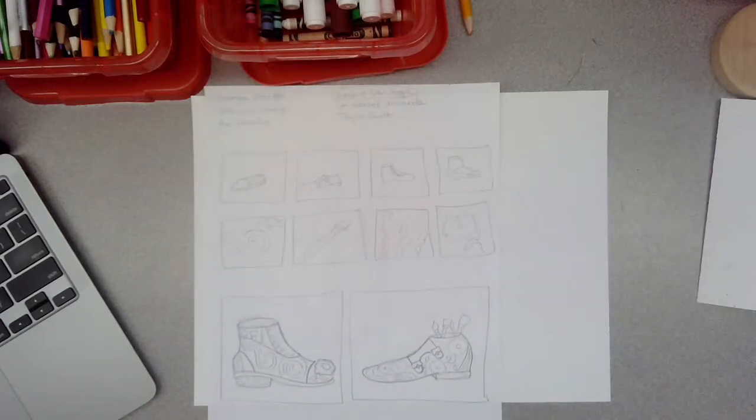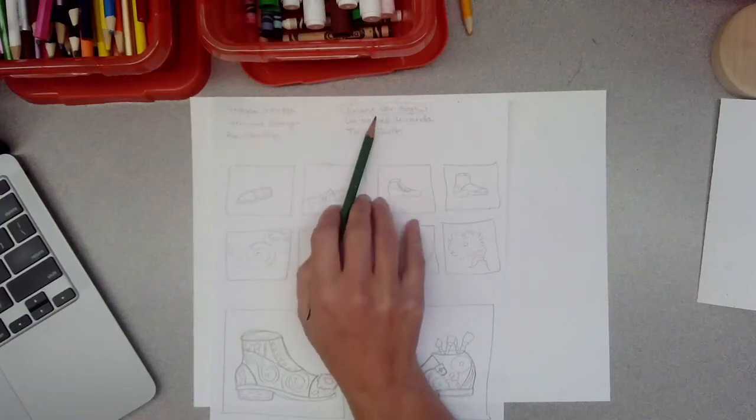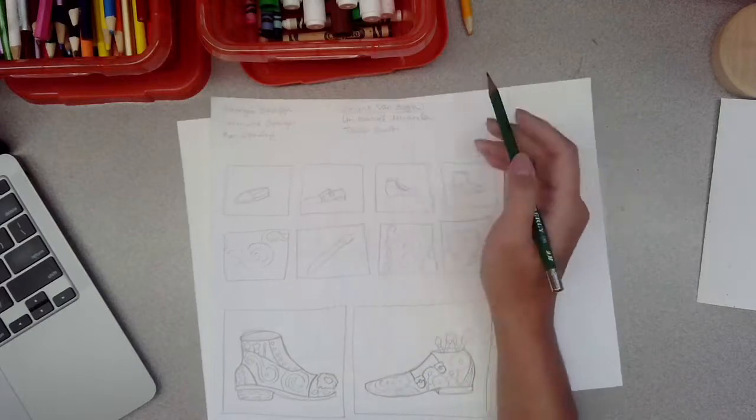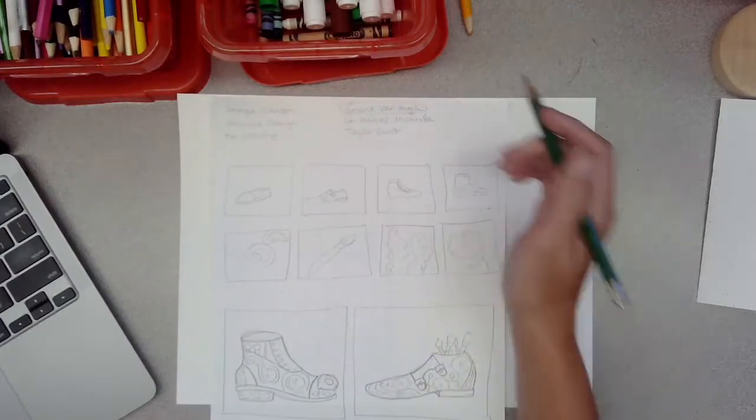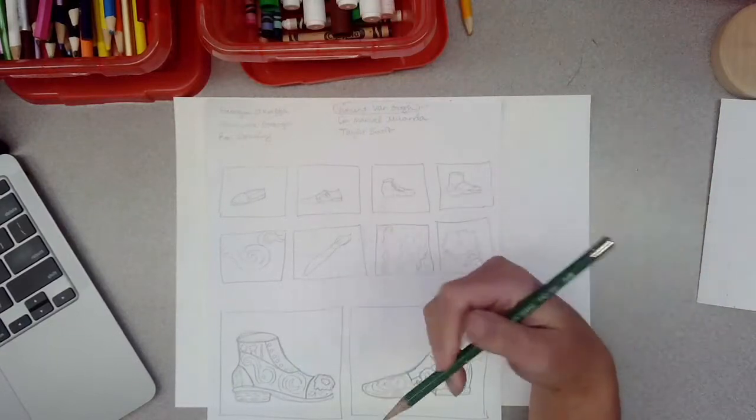I'm going to begin designing my shoes for my character or celebrity inspiration. I have my plan sheet here and I made my list of people. I circled my favorite one, so I'm doing Vincent van Gogh who is a post-impressionist artist from the 1800s.